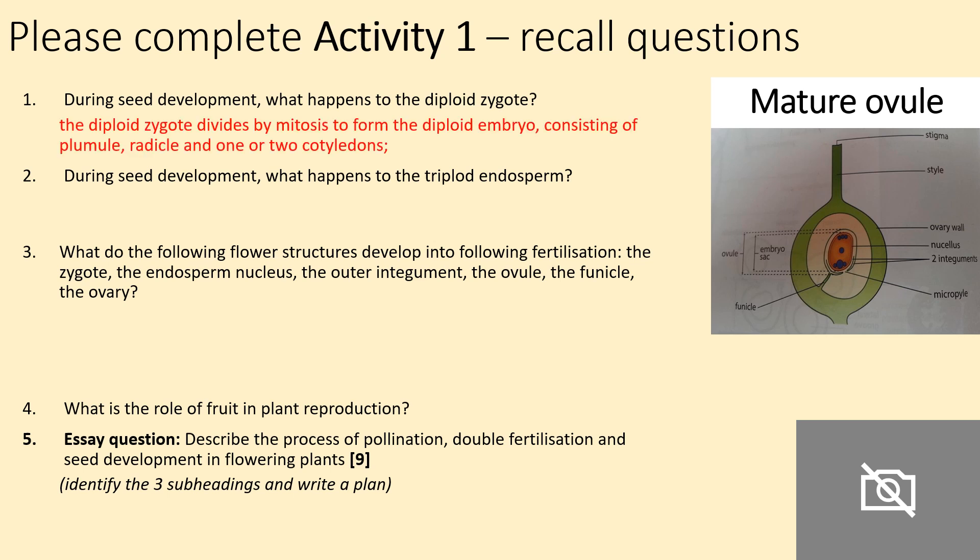During seed development, what happens to the diploid zygote? The diploid zygote divides by mitosis to form the diploid embryo, consisting of the plumule, which is the baby shoot, the radicle, which is the baby root, and one or two cotyledons, which are basically seed leaves.